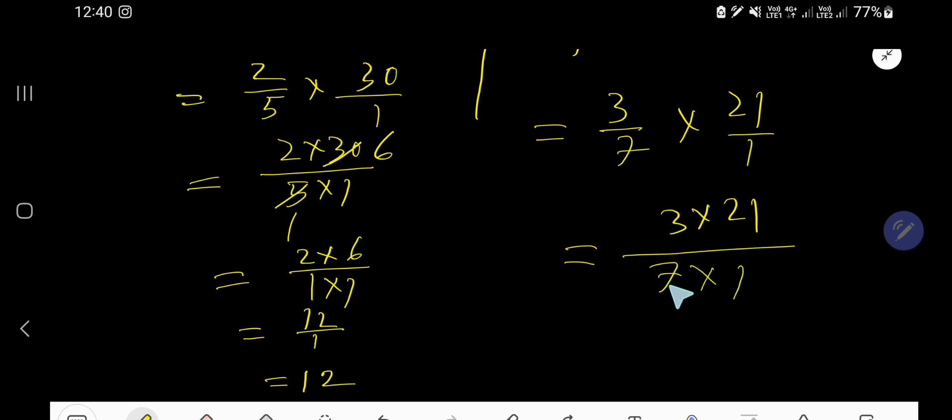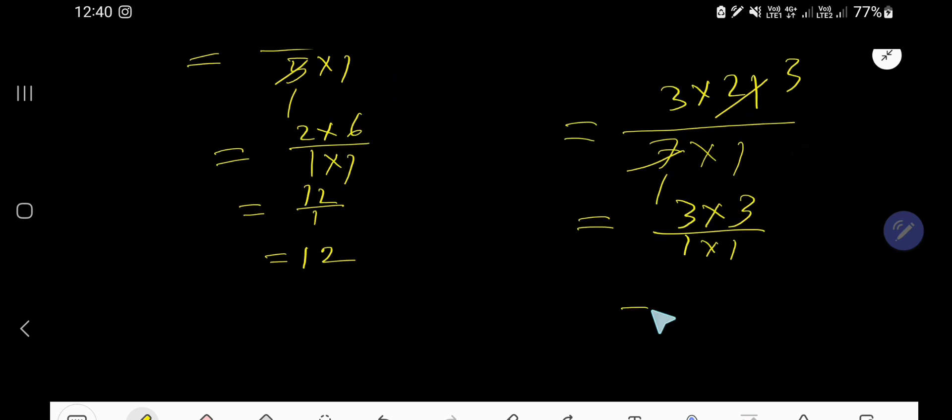If you divide this 7 by 7, you will get 1. And if you divide 21 by 7, you will get 3. So you are getting 3 times 3 and 1 times 1. So you are getting here 9 over 1. That means 9 answer.